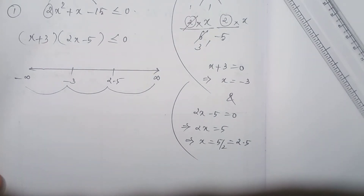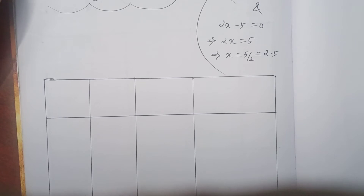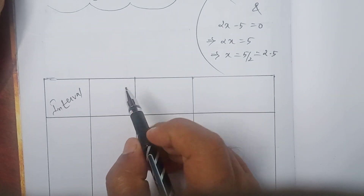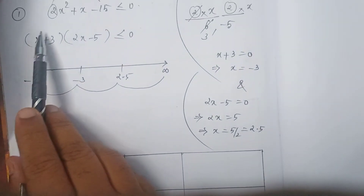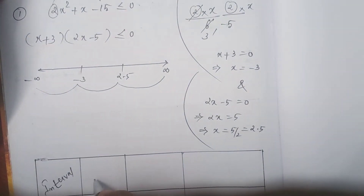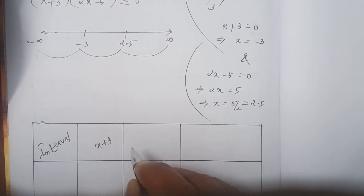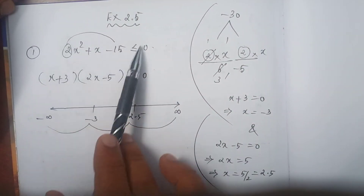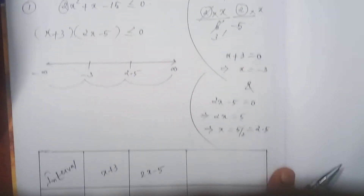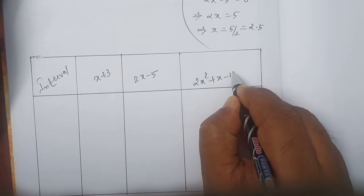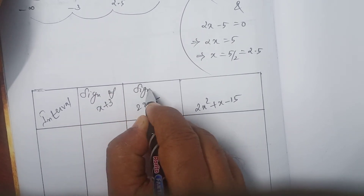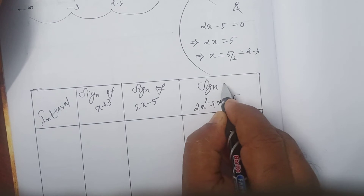Now we draw a table with four columns. First column: write the interval. Second column: write the expression x plus 3. Third column: 2x minus 5. And the last column: if you multiply these two, you get the full expression 2x squared plus x minus 15. Write the sign of each in every column.